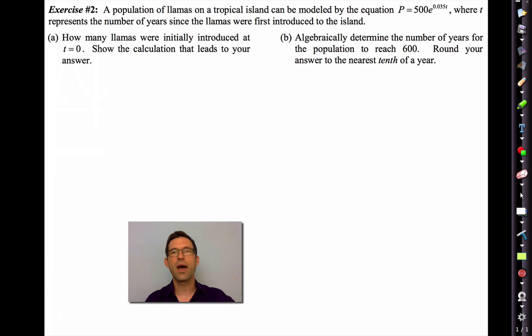Exercise number two. Now we're going to get into some exponential modeling. A population of llamas on a tropical island can be modeled using the equation p equals 500 times e raised to the 0.035t, where t represents the number of years since the llamas were first introduced to the island. Letter a, how many llamas were initially introduced at t equals zero? Show the calculation that leads to your answer. You should not need your calculator to do this, so take a shot at this.